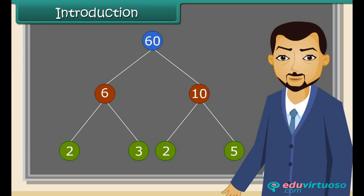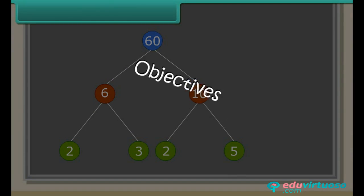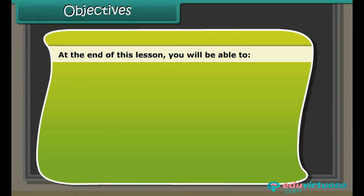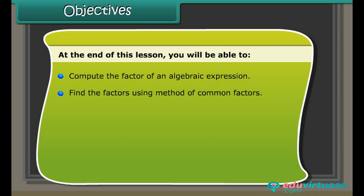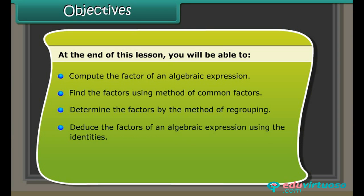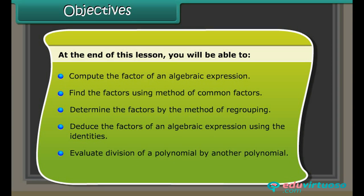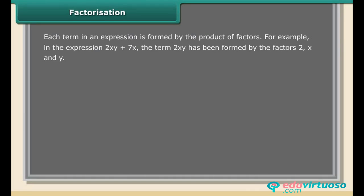Similarly, we can also express algebraic expressions as a product of their factors. In this chapter, we are going to discuss how to find the factors of an algebraic expression. Objectives: at the end of this lesson, you will be able to compute the factors of an algebraic expression, find the factors using the method of common factors, determine the factors by the method of regrouping, deduce the factors using identities, evaluate division of a polynomial by another polynomial, and identify errors while evaluating an algebraic expression.